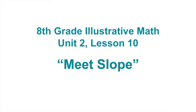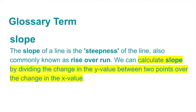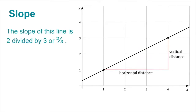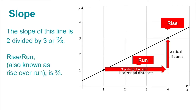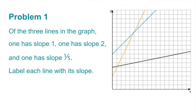8th Grade, Unit 2, Lesson 10: Meet Slope. Glossary term — slope: the slope of a line is the steepness of the line, also commonly known as rise over run. We calculate slope by dividing the change in y value between two points over the change in x value. For example, the slope of this line is two divided by three, or two-thirds. It has a vertical distance of two units up and a horizontal distance of three units to the right — that's rise over run.